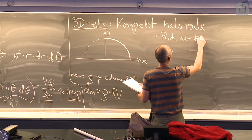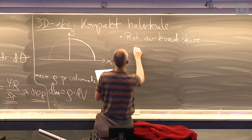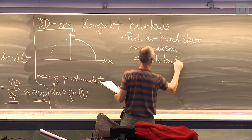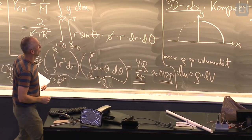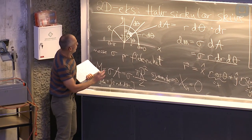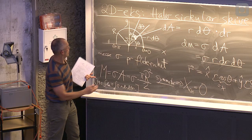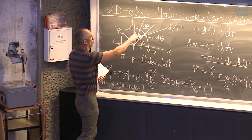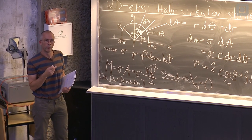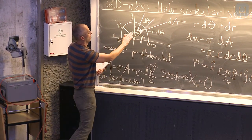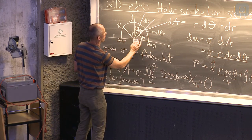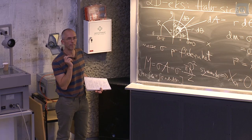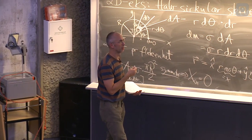Rotasjon av kvart skive om y-aksen gir halvkula. Det er et greit utgangspunkt, fordi at da kan jeg egentlig starte med å betrakte nettopp den skiva her, eller kanskje halvparten av den igjen da. For da ser dere at hvis jeg tar et sånn lite flateelement som jeg tok her, og roterer det omkring y-aksen på samme måte, så får jeg en tynn ring. Og hvis jeg gjør det samme med alle flateelementer av den kvarte skiva der, så får jeg hele den kompakte halvkula. Så hvis jeg klarer å summere opp alt det her, så får jeg riktig svar.